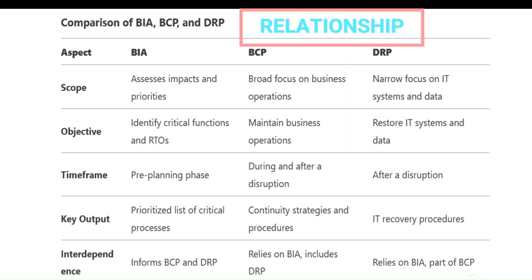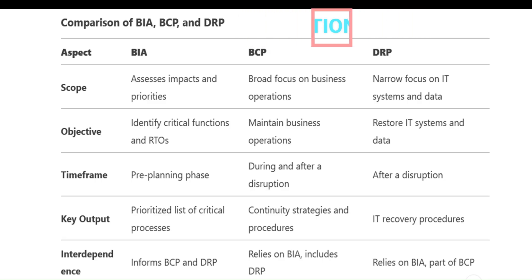The key relationship between BIA, BCP, and DRP is that BIA identifies what needs to be protected and how quickly. BCP uses BIA insights to create a broader plan for maintaining business operations, and DRP is a subset of BCP, focusing specifically on IT recovery. In summary, BIA, BCP, and DRP work together to ensure an organization can withstand and recover from disruptions effectively.